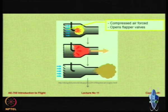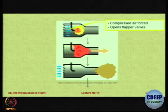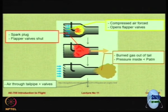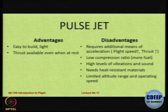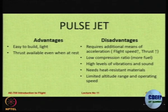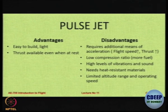The compressed air from the front forces the flapper or butterfly valves open, and the timing is very important — when you open it, the combustion should start at that time only. With the combustion, the back pressure closes the valve and the exhaust comes out. As it is exhausted, air is again sucked in. It is very easy to build, it is quite light, it is very simple, and even when you are at rest you can get thrust because you do not need a very high flight speed. People have built pulse jets which can even operate while stationary.